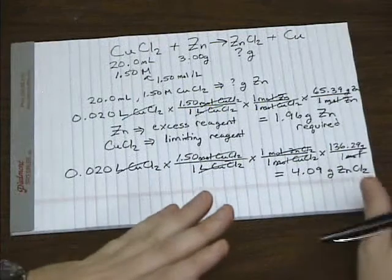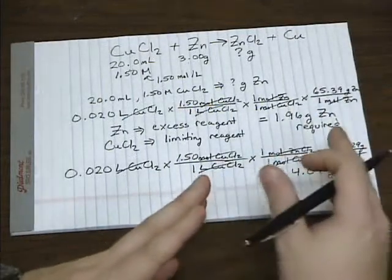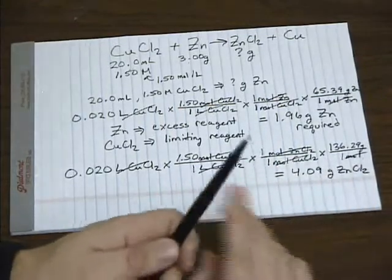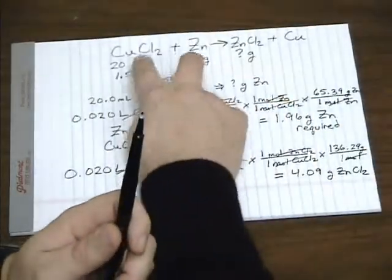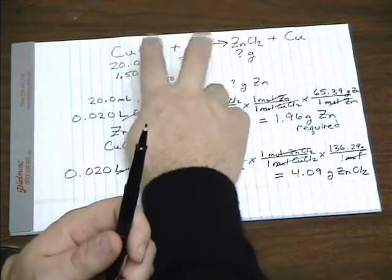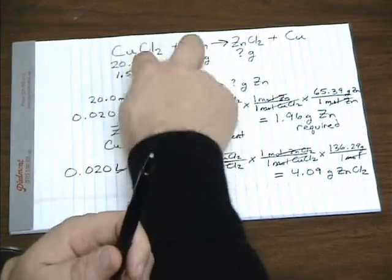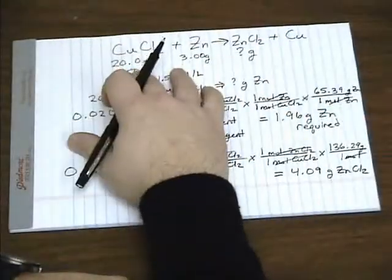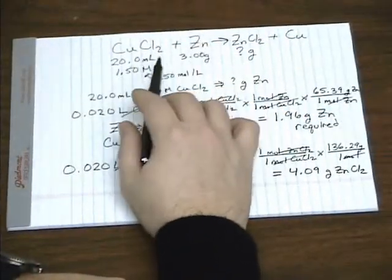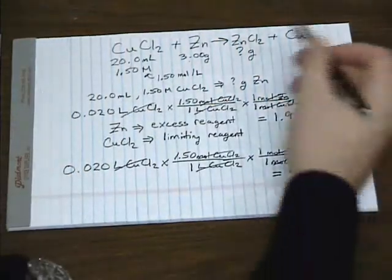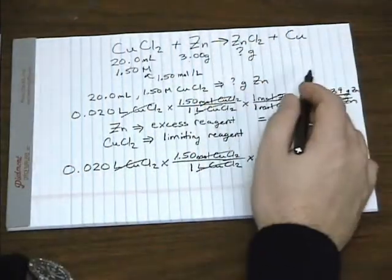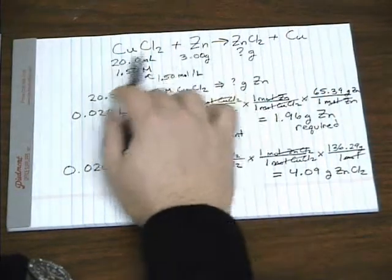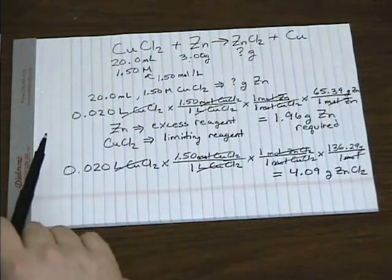So remember, one way to recognize just a simple stoichiometry problem from a limiting reagent problem is that limiting reagent problems are easily identified by having two starting amounts, or given two amounts of reactants. Again, you can't assume that they're both going to react completely. So before you can find how much product you're going to get, you first have to determine which one's a limiting reagent.